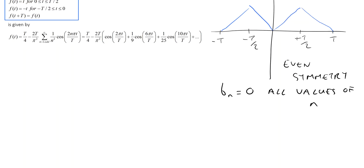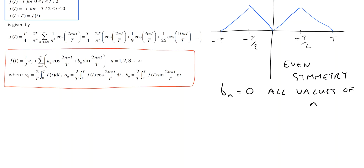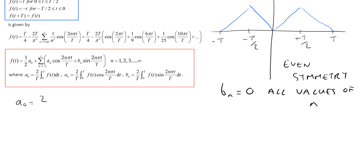At this point we can look at the definition of the Fourier series. Here, taken from the lecture notes, is the definition of the Fourier series for a function that has periodicity equal to big T. What we can see is that a0 is equal to 2 divided by T, and then it's the integral over one period of the function we're trying to find the Fourier series of, integrated with respect to dt.